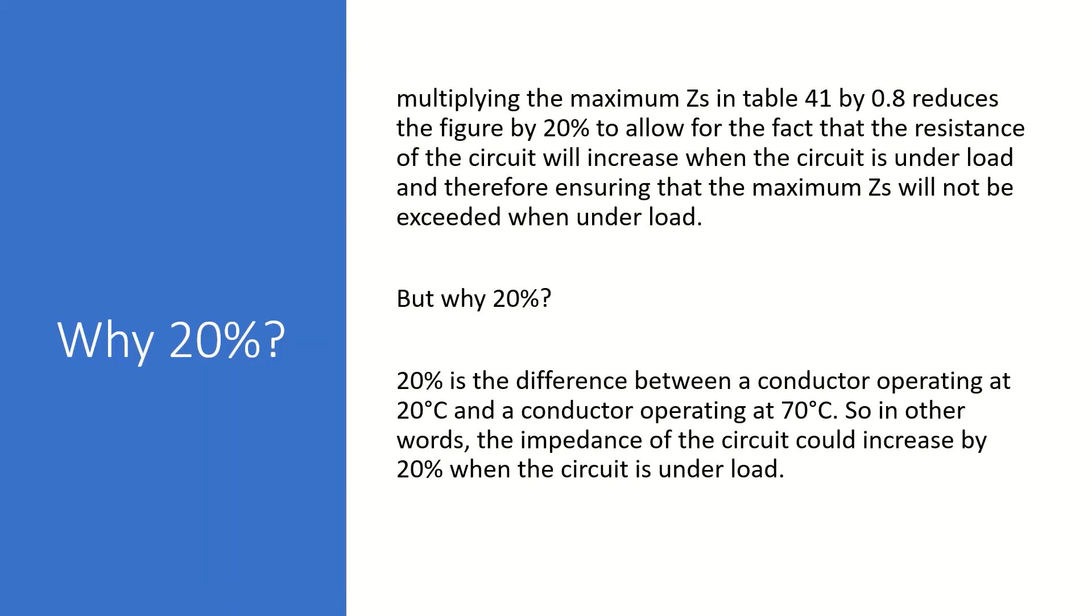So multiplying the maximum Zs in table 41 by 0.8 reduces the figure by 20% to allow for the fact that the resistance of the circuit will increase when the circuit is under load, and therefore ensuring that the maximum Zs will not be exceeded when the circuit is under load.